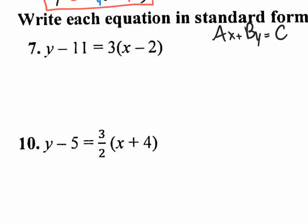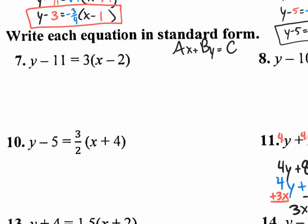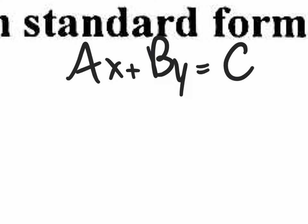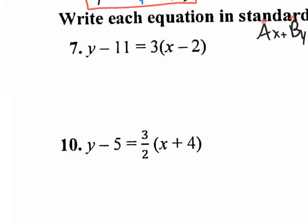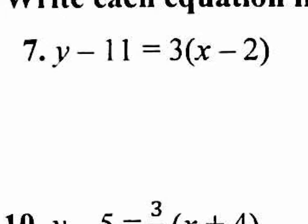Number 7 has different instructions — write an equation in standard form. Standard form is Ax plus By equals C, where A, B, and C are integers. We do not want decimals or fractions. The equation given is in point-slope form — y minus y1 equals m parenthesis x minus x1. If I asked you to name a coordinate the line passes through, you'd look at x1 and y1 but think opposite because of the minus signs. If this is minus 2, x is actually 2; if this is negative 11, y is actually 11 — so the line crosses through (2, 11). But they want us to change it to standard form.